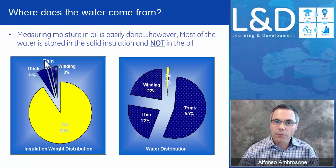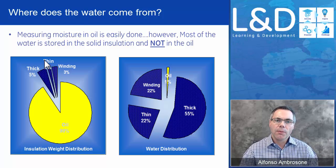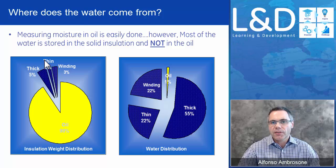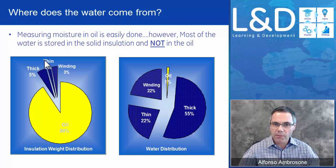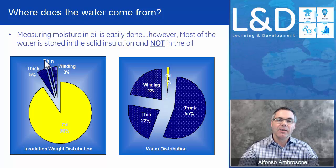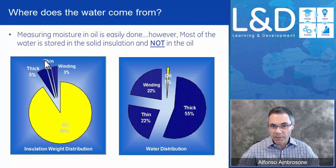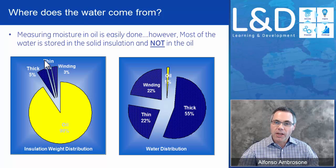Let's have a look at this moisture. Here are two pie charts. The pie chart on the left represents the distribution of insulation — 90% of the insulation in a transformer is oil, and only 10% is paper. However, when you look at the relationship of water distribution, 99% of the water is actually in the paper, and less than 1% is in the oil. So that's where the water comes from — a breakdown of the paper bonds will generate moisture.